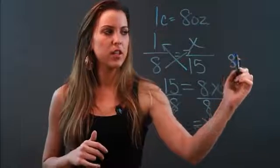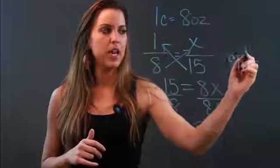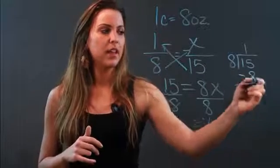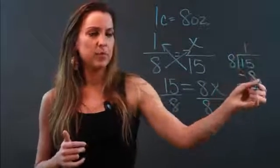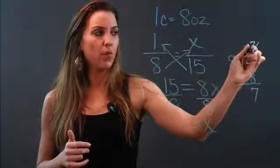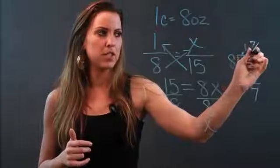So on the side we can do some long division. 8 goes into 15 one time. 1 times 8 is 8. 15 minus 8 is 7. And the way that we write that is, we're not going to write remainder 7. We're going to take that 7 and we write it over the number that we just divided into, which is 8.